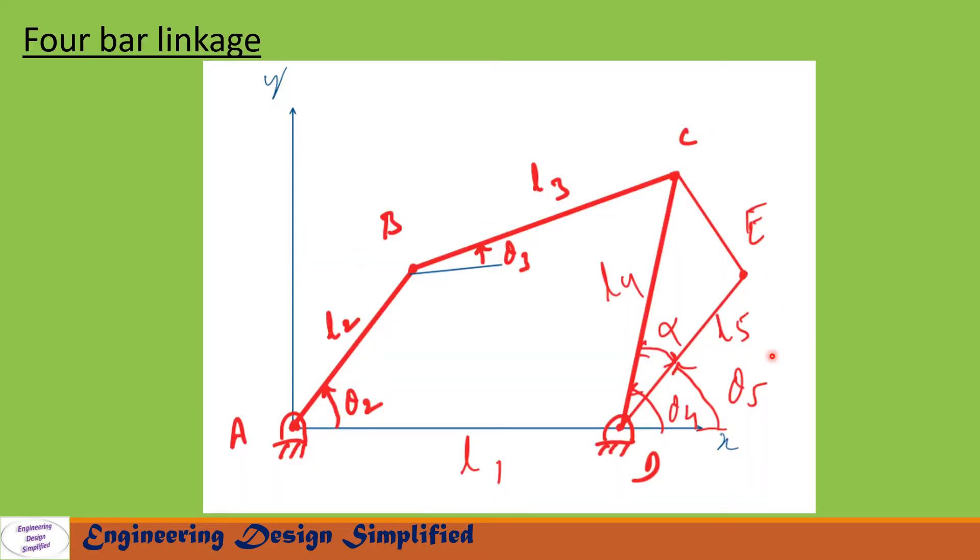Here is a typical 4 bar linkage and link AD is a fixed link whose length is L1. Link AB is a crank whose length is L2 and it is at an angle theta2 from horizontal. Link BC is a coupler whose length is L3 and it is at an angle theta3 from horizontal. Link DC is a follower whose length is L4 and it is at an angle theta4 from horizontal.